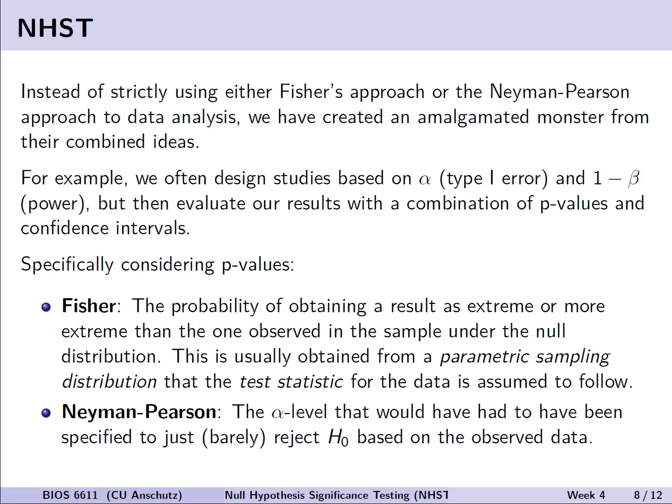The catch here, though, is that in practice, we actually primarily obtain these from a parametric sampling distribution. The test statistic we're assuming for the data is assumed to follow. So the reason we spent the first few weeks of the course introducing the idea of discrete and continuous distribution in these things like normal, binomial, Poisson, exponential, is that those are parametric distributions that we can use to calculate the cumulative distribution function or other features to actually calculate then a p-value of something being as or more extreme.